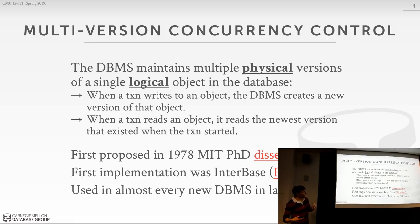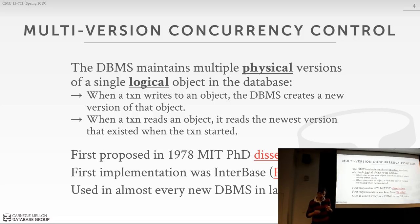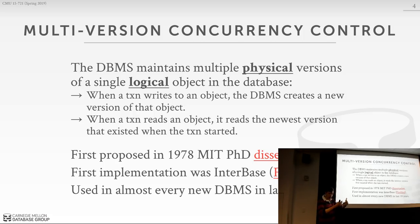Multiversion concurrency control — if you took the intro class last semester, some of this will be review. The basic idea is that the database management system will maintain different physical versions for any single object in the database that gets modified. For our purposes we'll focus on tuples. You'll have a single logical record, like a tuple in a student table, but anytime you modify it, underneath the covers the database system maintains different physical versions. Anytime you do an update on a tuple, it creates a new version.